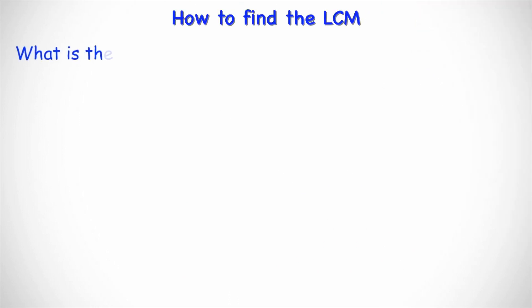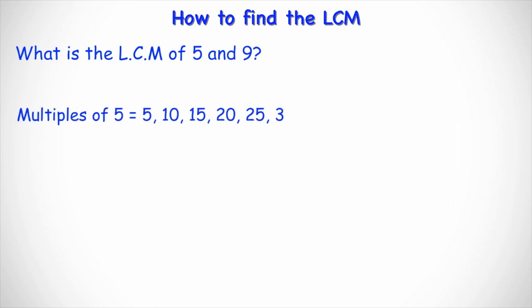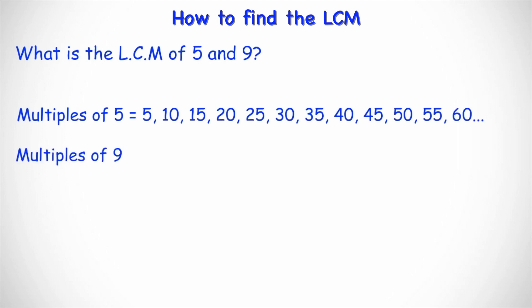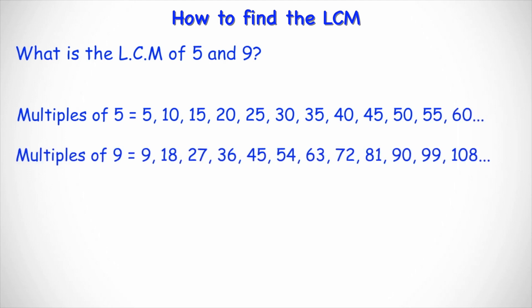Let's take a look at another example. Say you wanted to find the LCM of 5 and 9. What you do is list all the multiples of 5, which is effectively the times table for 5. Then you list all the multiples of 9. You find the first number that appears in both lists — and in this case, 45 is the first number that appears in both lists. Therefore the LCM of 5 and 9 is 45.